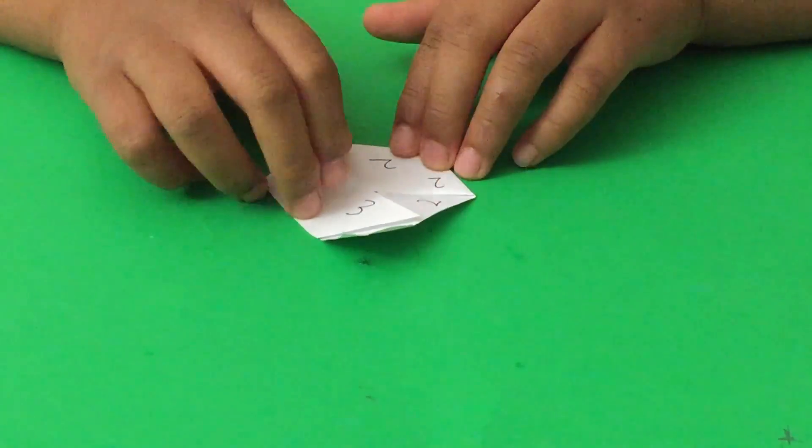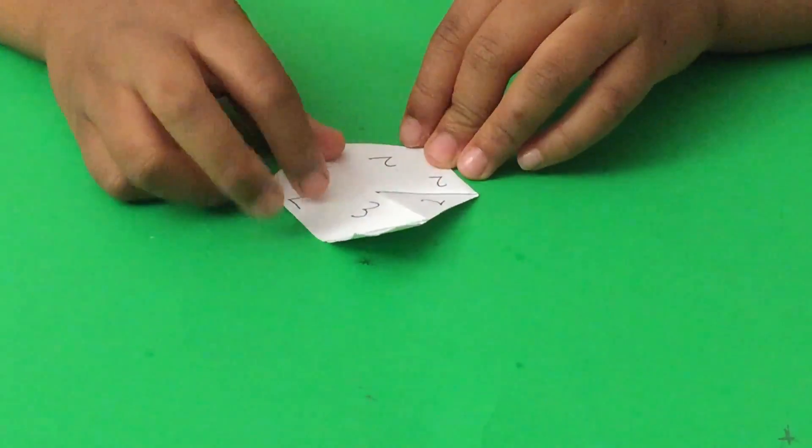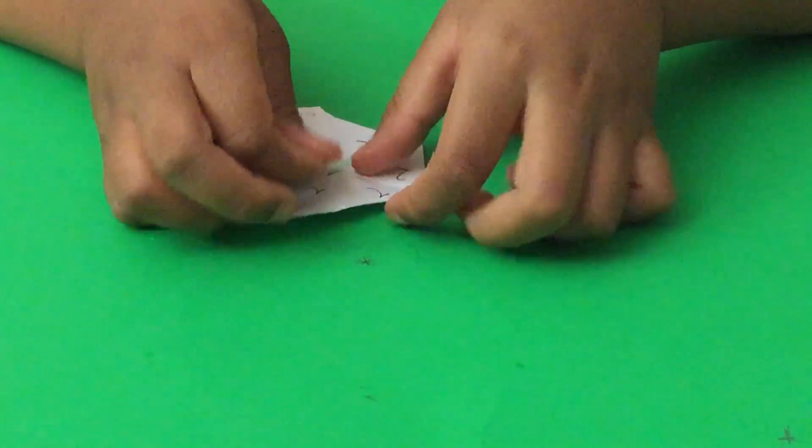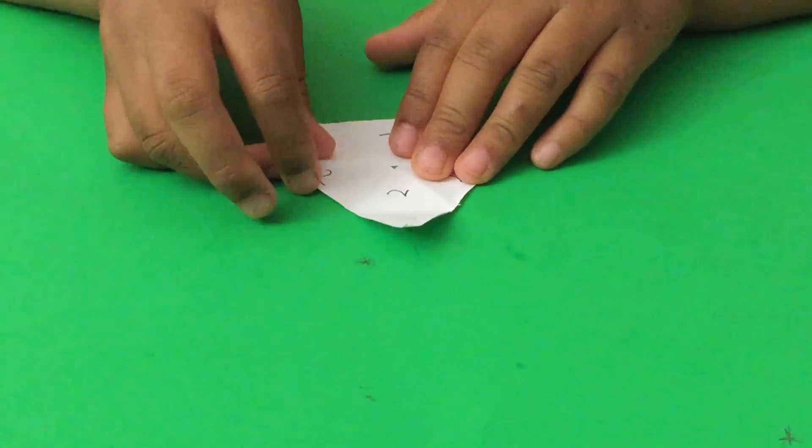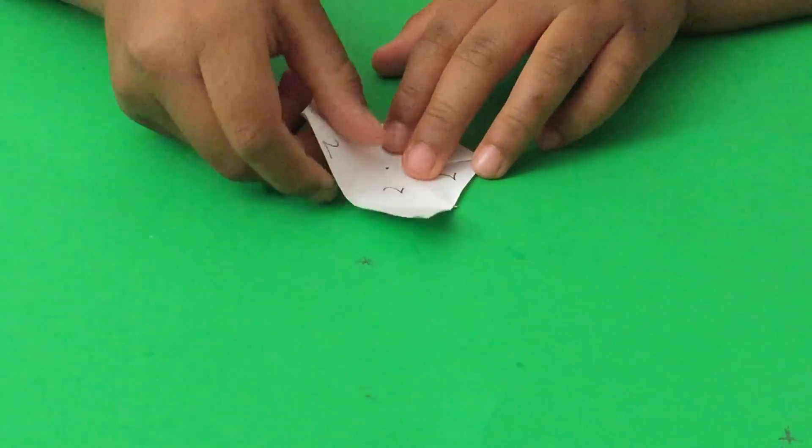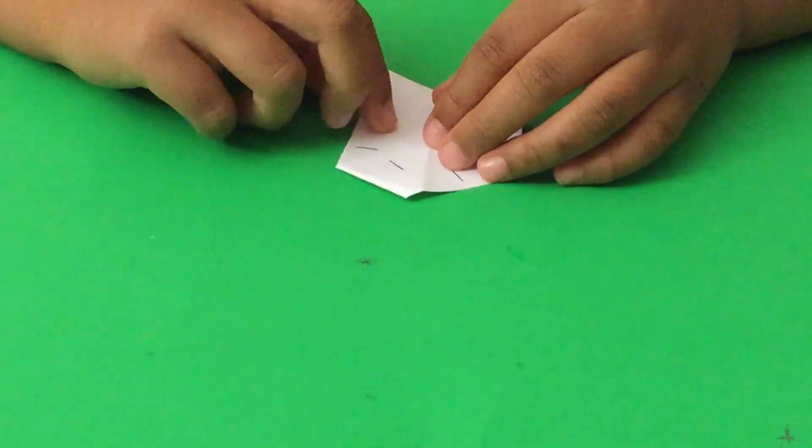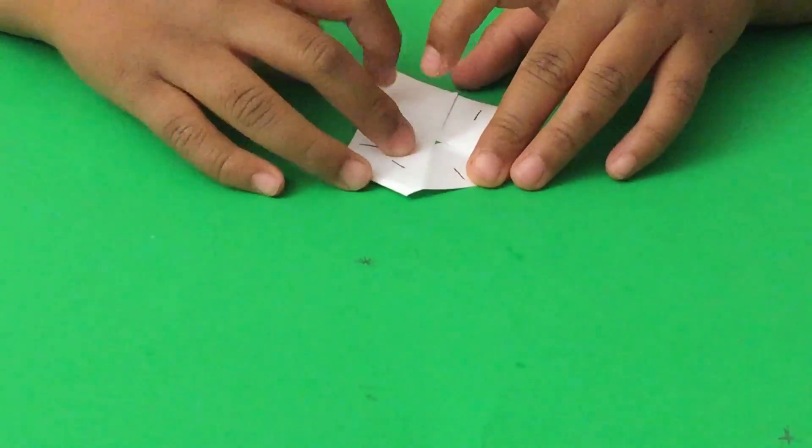Since we want all twos on one side, tuck this three on the back. Now, we've got all twos on one side. After that, flip and glue the two glue parts together.